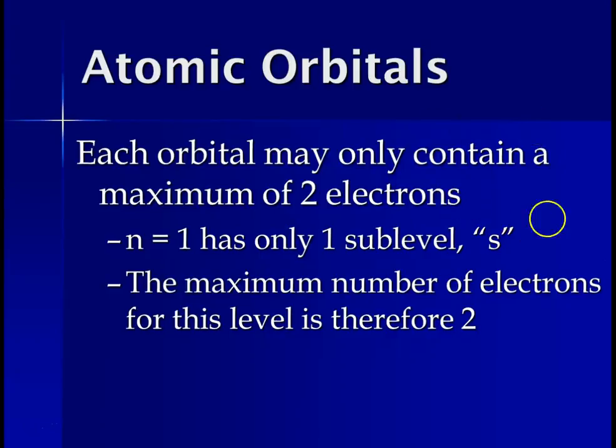Which is kind of like how many bedrooms does that level have. And the S sublevel has one bedroom, so one orbital that can hold electrons. And each bedroom or orbital is like a bunk bed. It can have a maximum of two electrons, one in the upper bunk and one in the lower bunk.